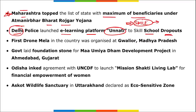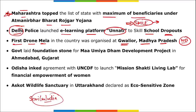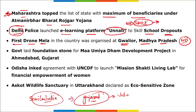The first Drone Mela was held in Gwalior, Madhya Pradesh. The biggest Drone Mela was held in New Delhi, inaugurated by Prime Minister Narendra Modi. Semicon India was held in Bangalore. Gujarat has been given the semiconductor manufacturing policy, and Vedanta and Foxconn signed an MOU for semiconductor manufacturing in Gujarat.